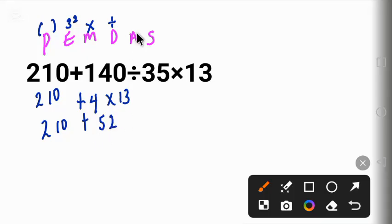Finally, we have addition and subtraction. We work from left to right also. Looking at this from the left, we have plus, so we work the addition. 210 plus 52 will give us 262.